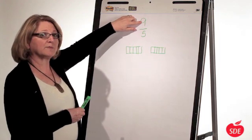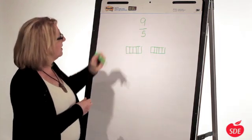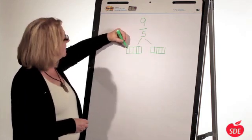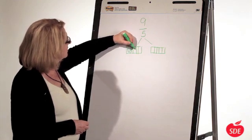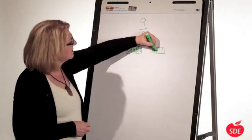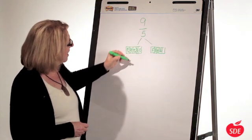The numerator tells me how many parts I need to shade in. So I need to shade in 9 parts. I tell the kids to scribble shade. 1, 2, 3, 4, 5, 6, 7, 8, 9.